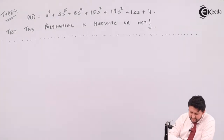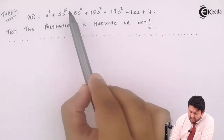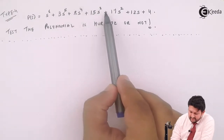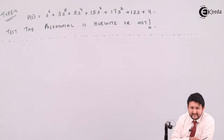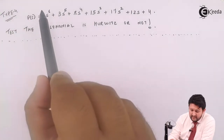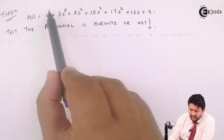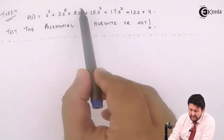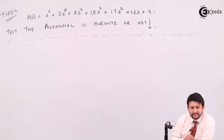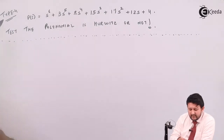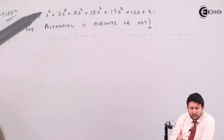Initial check: all the coefficients should be positive. Is it positive? Yes — 6. The power should be decreasing from 6, 5, 4, 3, 2, 1, constant. Power of s. Third, check whether the power is even or odd — no.